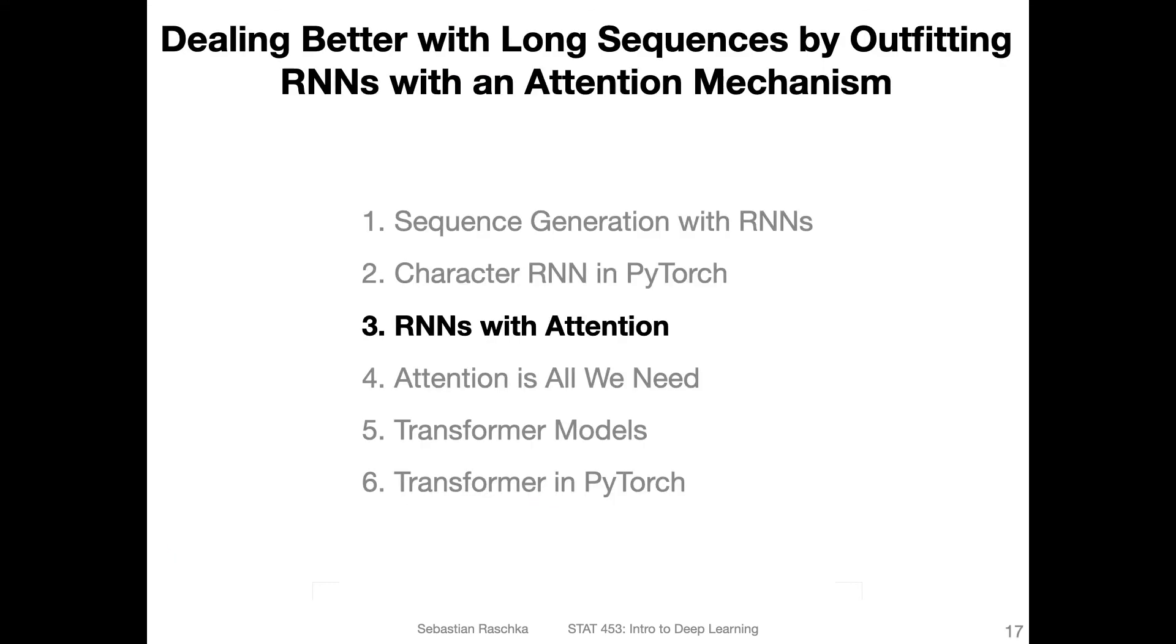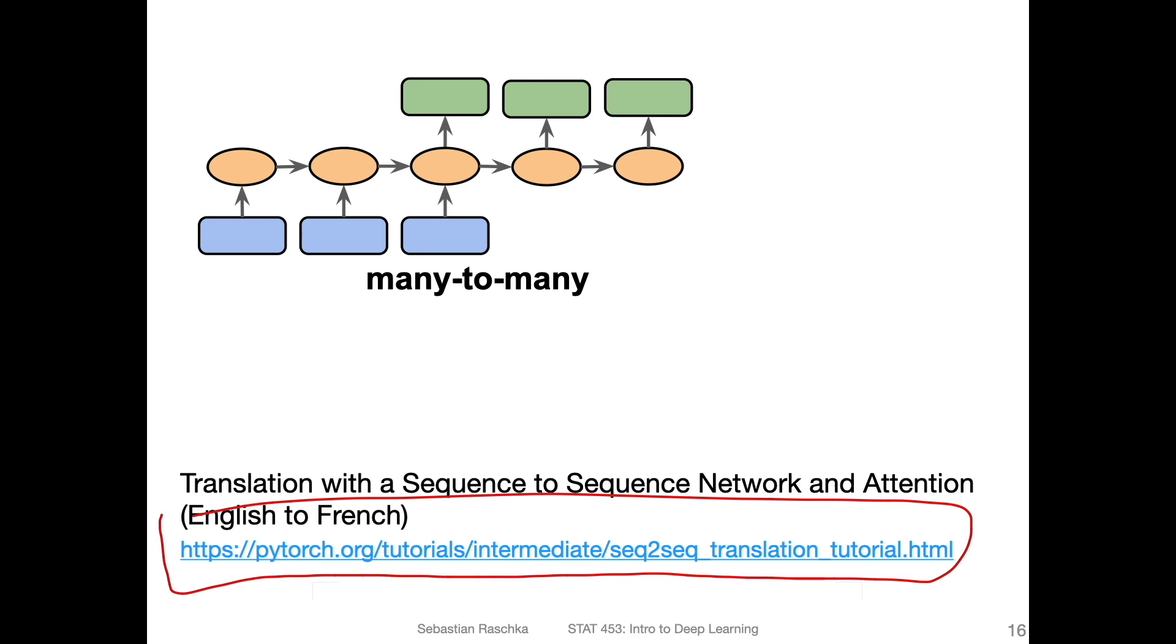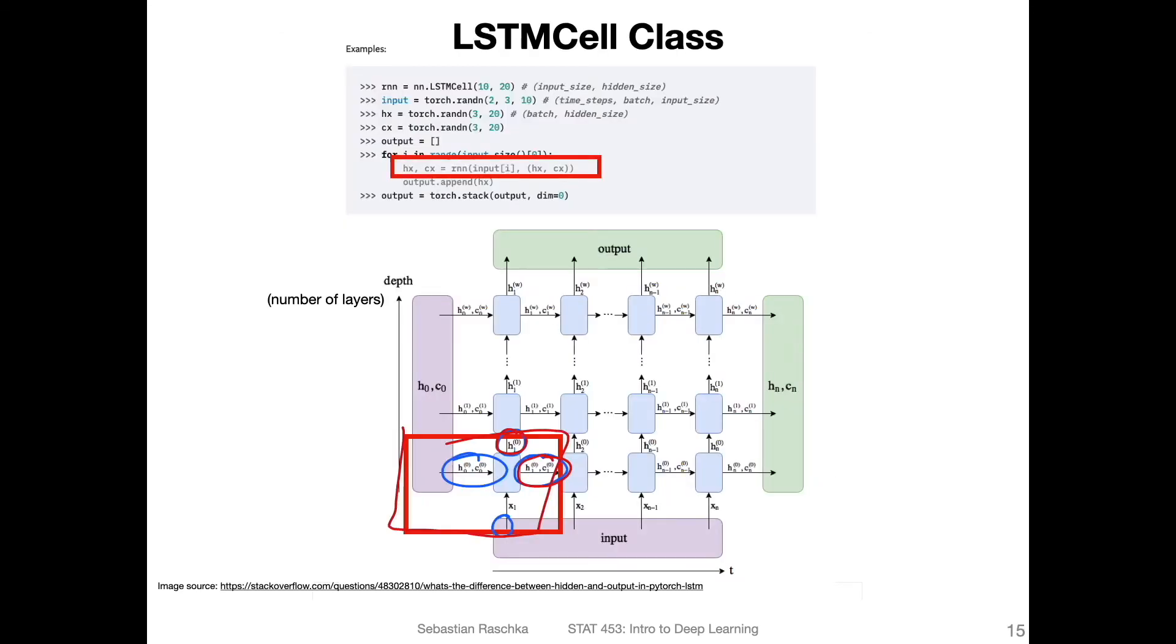So the next video we will focus on the character-level RNN, generating new text, and we will be using this LSTM cell class.